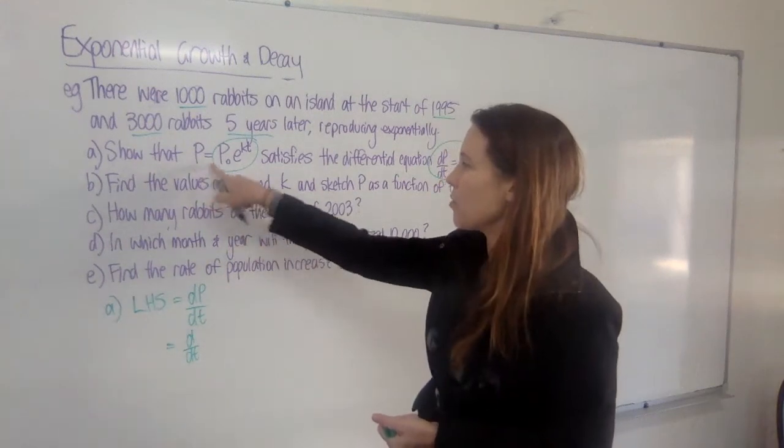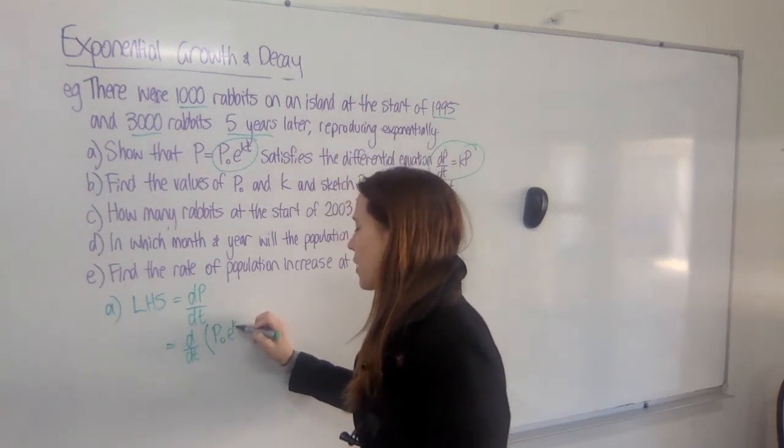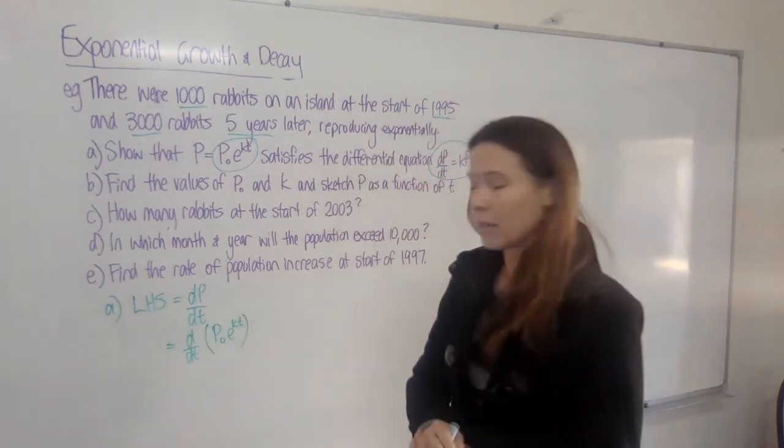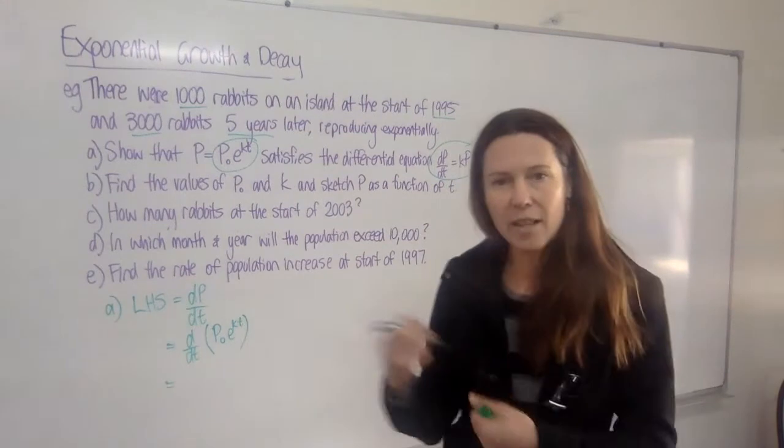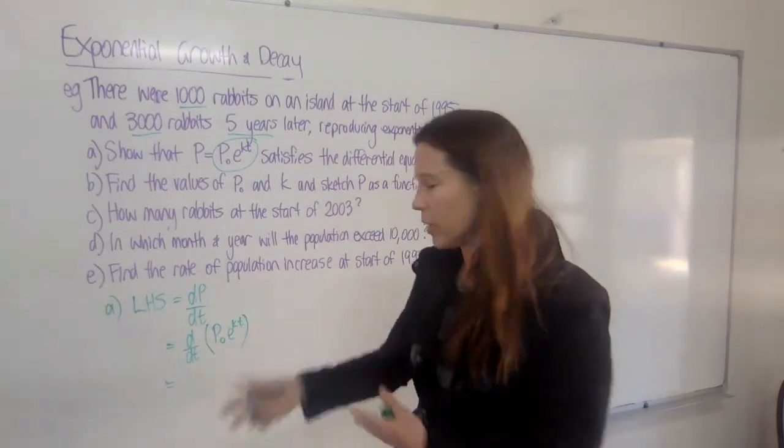And what is P equal to? Well, it's equal to all of this. So I just put this in brackets and say this is the stuff that we have to differentiate with respect to time. Now, on the next line, I'm actually doing the differentiation, so I don't need to write that I'm going to do it. I just do it.